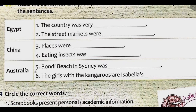Australia. Number five: Bondi Beach was... Number six: the girls with the kangaroos are Isabela's...